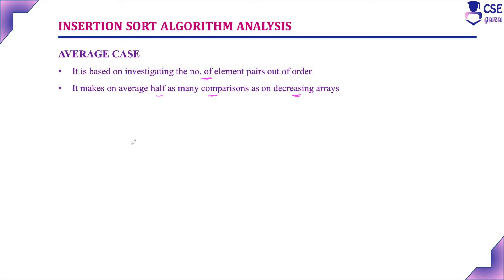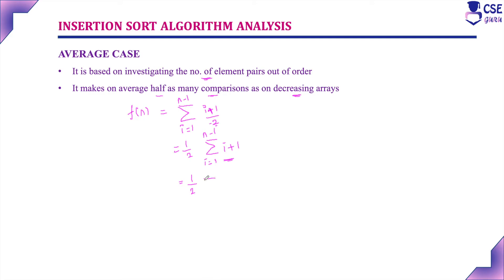So the average case efficiency: F(N) is equal to summation from i equal to 1 to N minus 1 of (i+1)/2. This can be rewritten as (1/2) times summation from i equal to 1 to N minus 1 of (i+1), where 1/2 is taken out. Now we can separate this as (1/2) summation from i equal to 1 to N minus 1 of i, plus (1/2) summation from i equal to 1 to N minus 1 of one. This gives (1/2) into (1 plus 2 up to N minus 1).